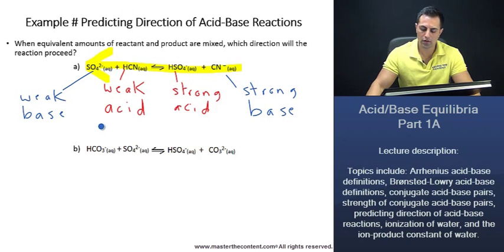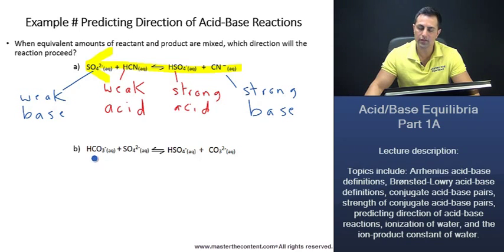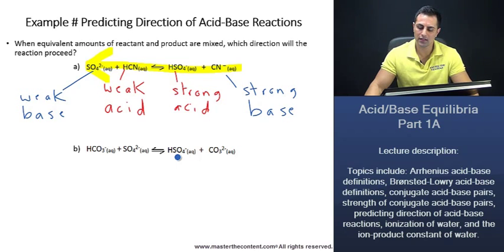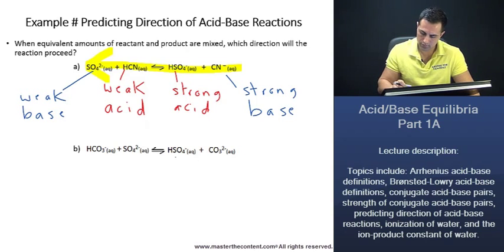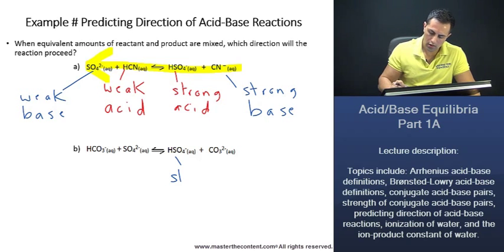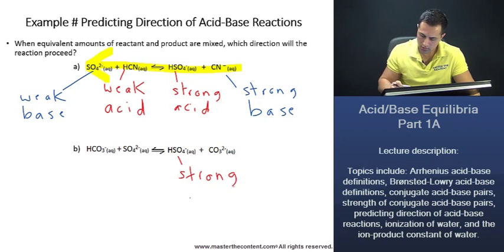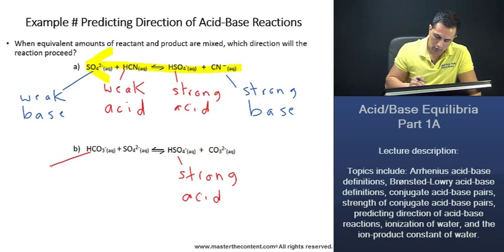Now we can follow the same methodology to solve our second problem. We'll start by identifying the strong acid and the strong base. We have bicarbonate and we also have hydrogen sulfate. Going back to our table, hydrogen sulfate is a stronger acid than bicarbonate. We label hydrogen sulfate as our strong acid and bicarbonate as our weak acid.